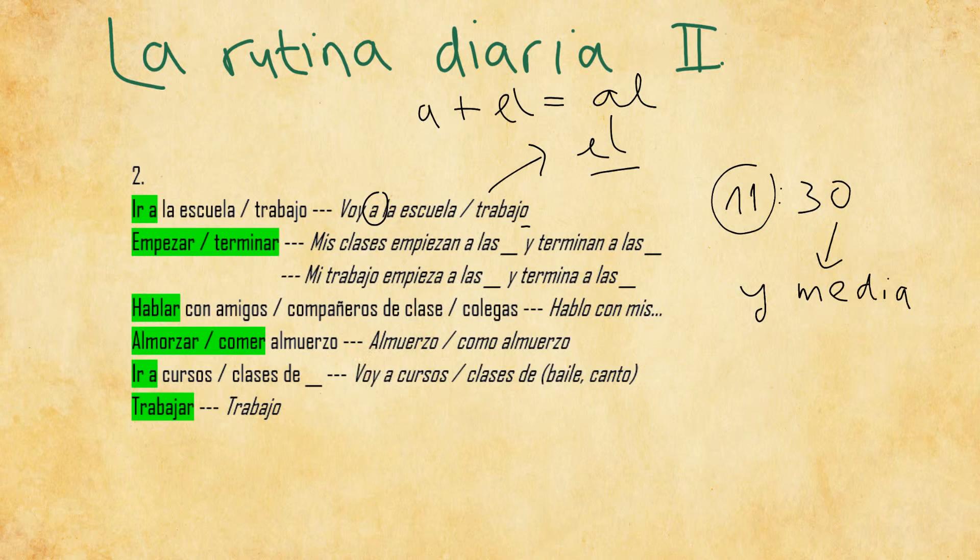In the first person, note that this is a completely irregular verb. Ir becomes voy in the first person. So voy a cursos, or voy a clases de, which means I go to courses or I go to classes of, for example baile, which means dance, or canto, which means singing. So voy a cursos de baile means I go to dancing classes. Voy a clases de canto means I go to singing classes. You should be able to fill these in with some other words that we've covered in the hobbies part or in talking about yourself. Or you can just say voy a cursos generally and you don't have to specify.